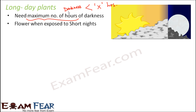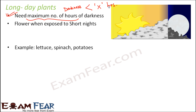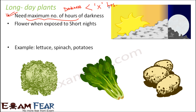Long day plants flower when exposed to short nights — the night should be shorter and the day should be long, hence they are called long day plants. This phrasing can be confusing as written in most textbooks: 'maximum number of hours of darkness' means that is the upper limit — it should be exposed to darkness for less than x hours. Examples of such plants are lettuce, spinach, and potatoes; all these plants flower during long days with short nights.